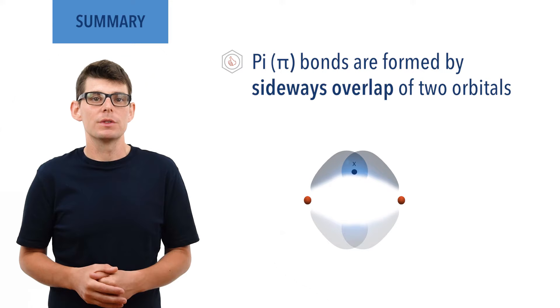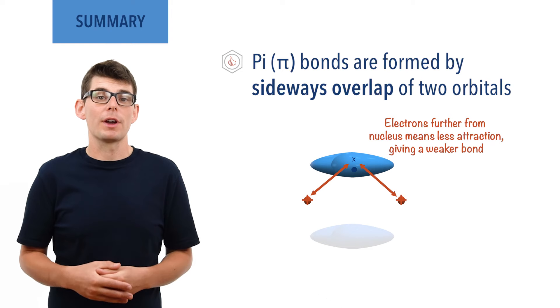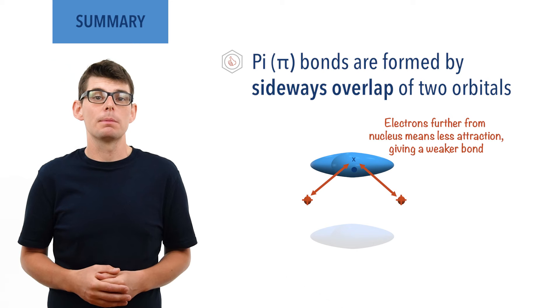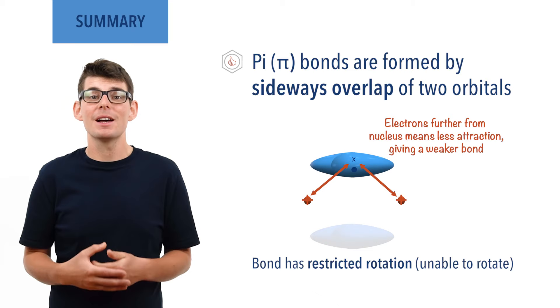Electrons in a pi bond are further from the nuclei of both atoms compared to a sigma bond, giving a weaker attraction and a bond that is easier to break. As P-shaped orbitals have two lobes, a pi bond has two areas of electron density — one above and one below a sigma bond already formed between the atoms. There is restricted rotation; the pi bond is unable to freely rotate and twist. I hope you found this video useful. Please check out other relevant videos and the links in the description below, and visit chemistrystudent.com for free notes and revision materials.